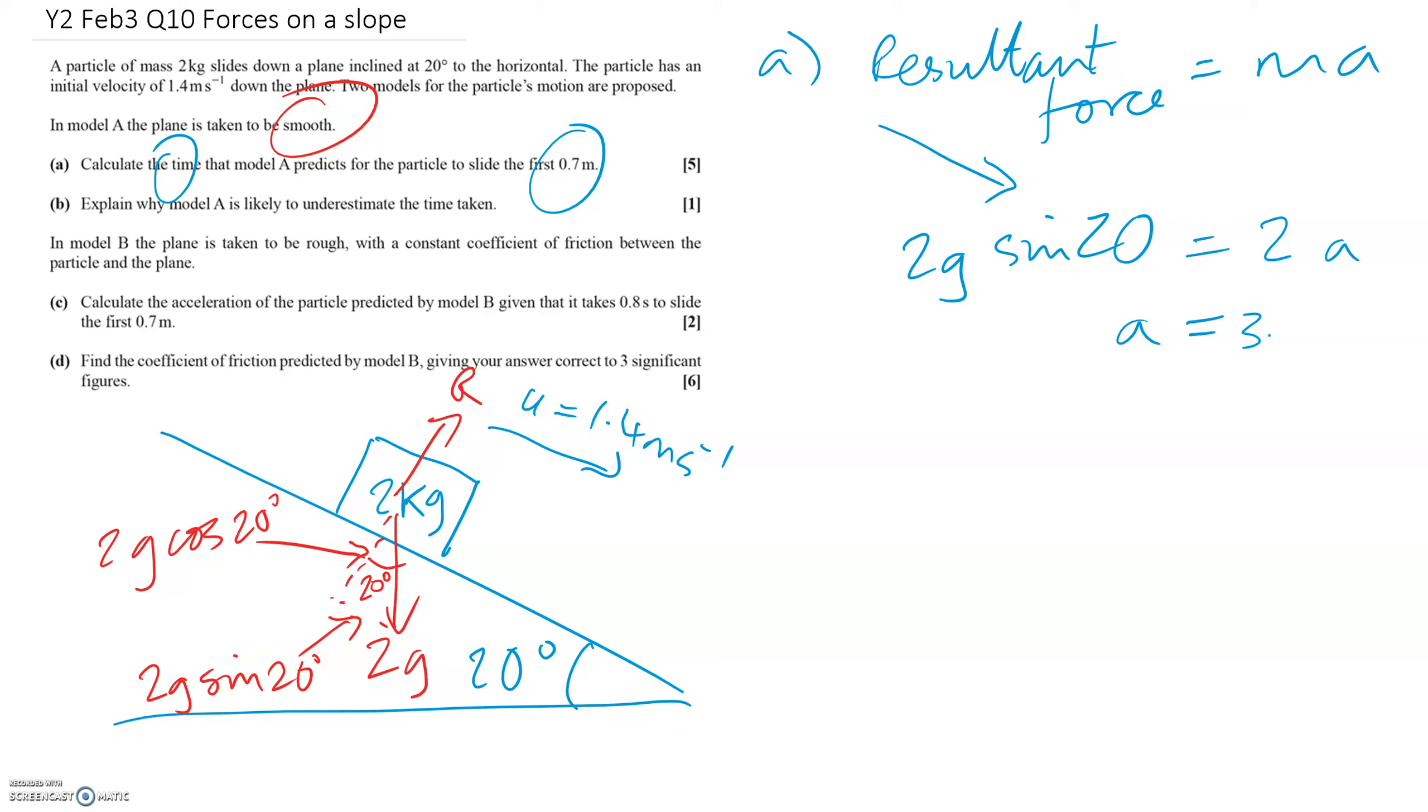Type that into the calculator, you get 3.352 meters per second squared. So that's the acceleration. We now need to think about using a SUVAT rule. Let's write down everything we know.